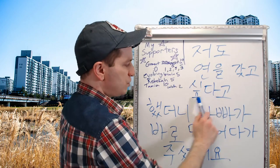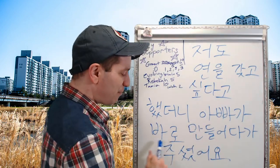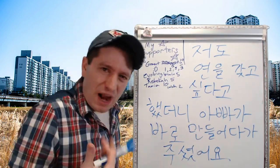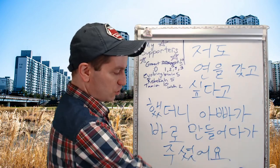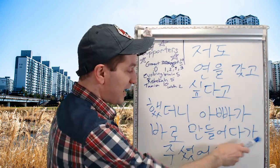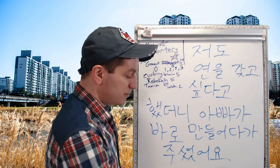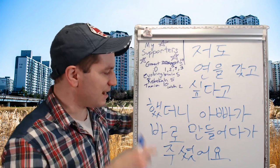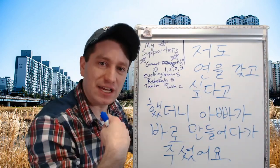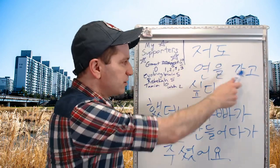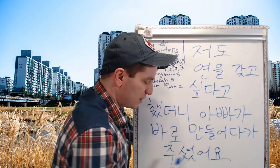저도 연을 갖고 싶다고 했더니 — so I said that I also want to have a kite — 아빠가 바로, my dad right away after hearing that, 만들어다가 주셨어요. He went and made it and then came back and gave it to me. I said I also wanted a kite and my dad right away went and made one and gave it to me here. 저도 연을 갖고 싶다고 했더니. 아빠가 바로 만들어다가 주셨어요.